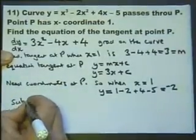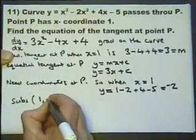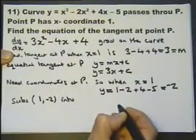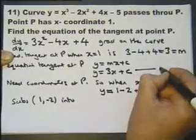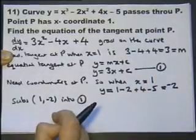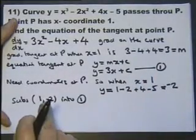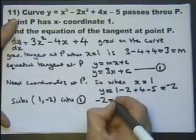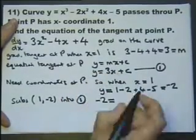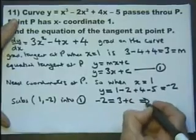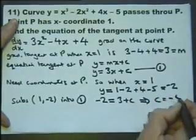So let's substitute that into... How am I going to tell the examiner what I'm doing? Oh, I know. I'll just label that equation 1. How about that for showing the examiner what I'm doing? x is 1, y is minus 2. So we've got minus 2 equals 3 ones plus c. And that gives us the value of c as minus 5.